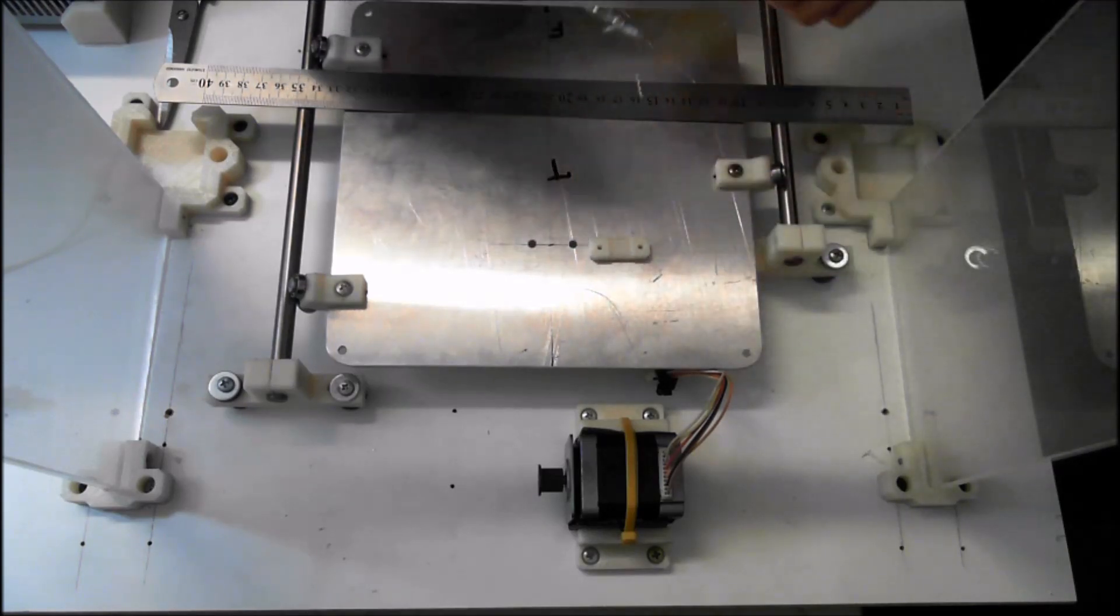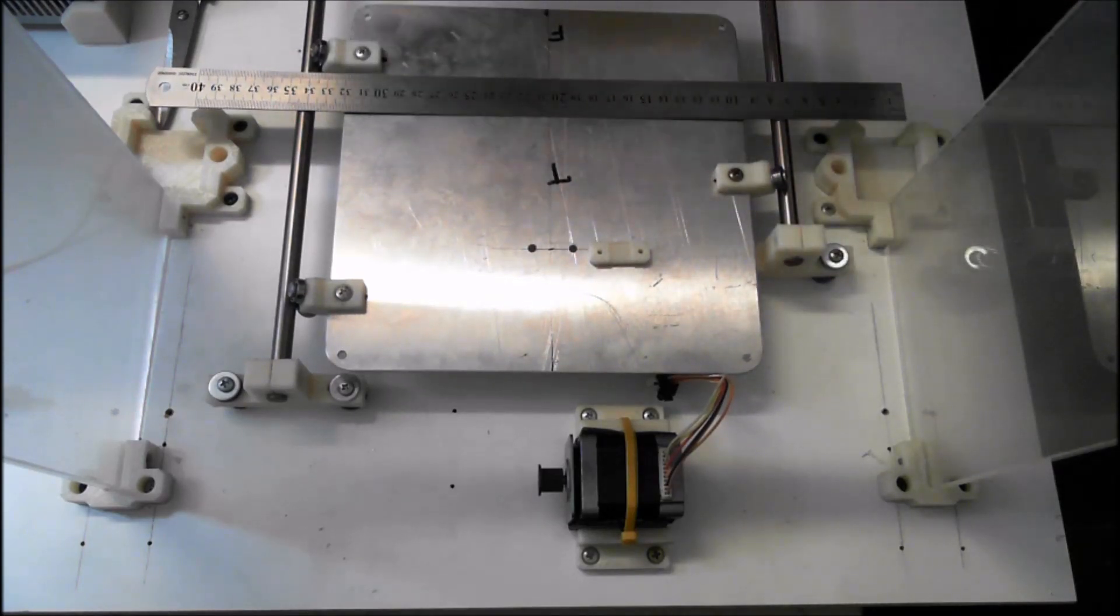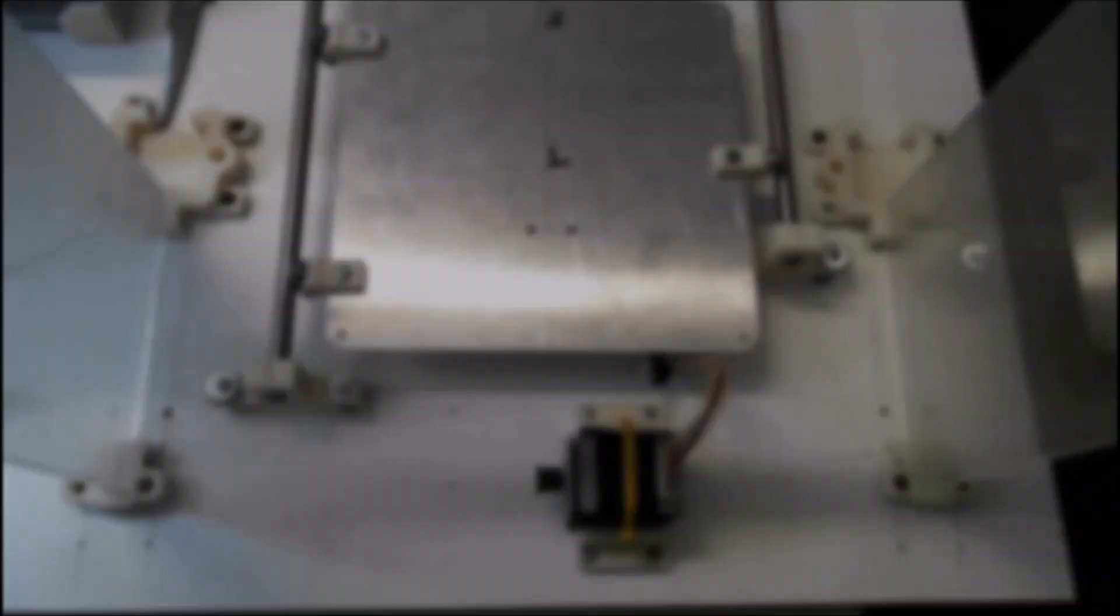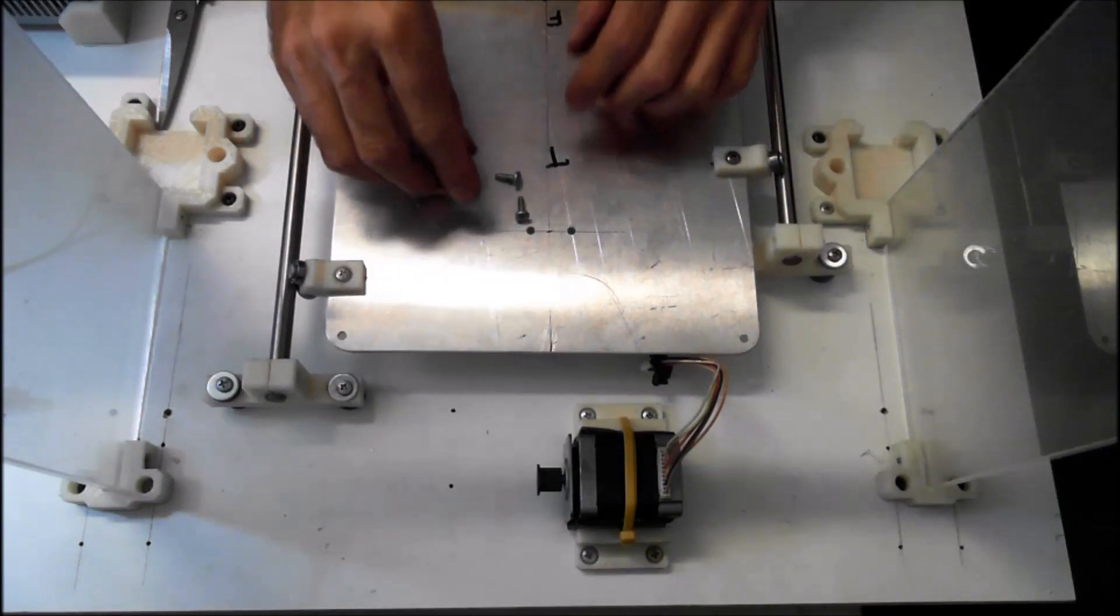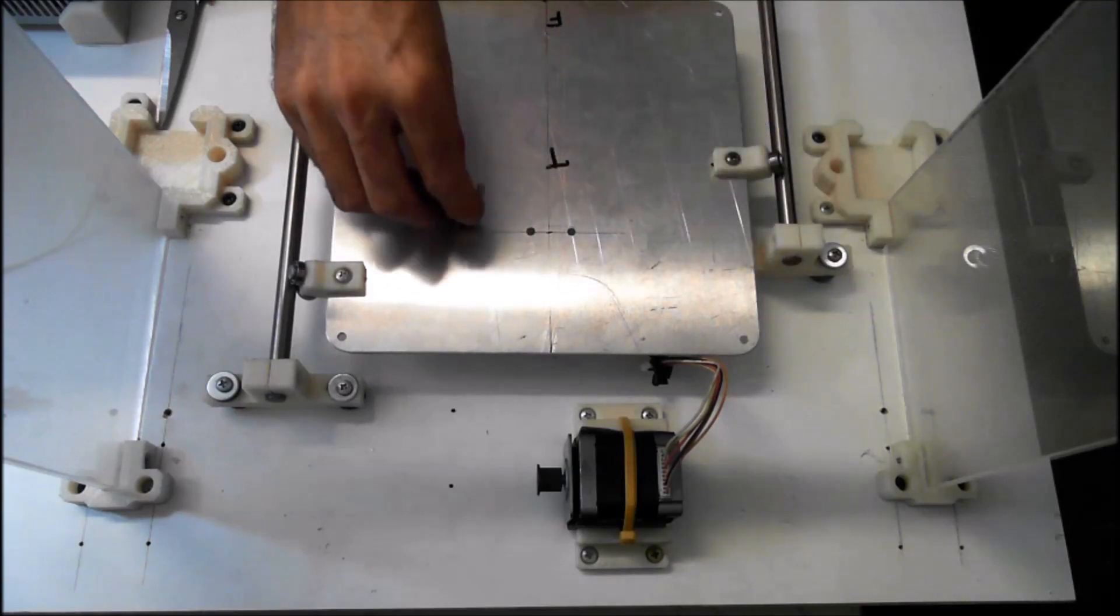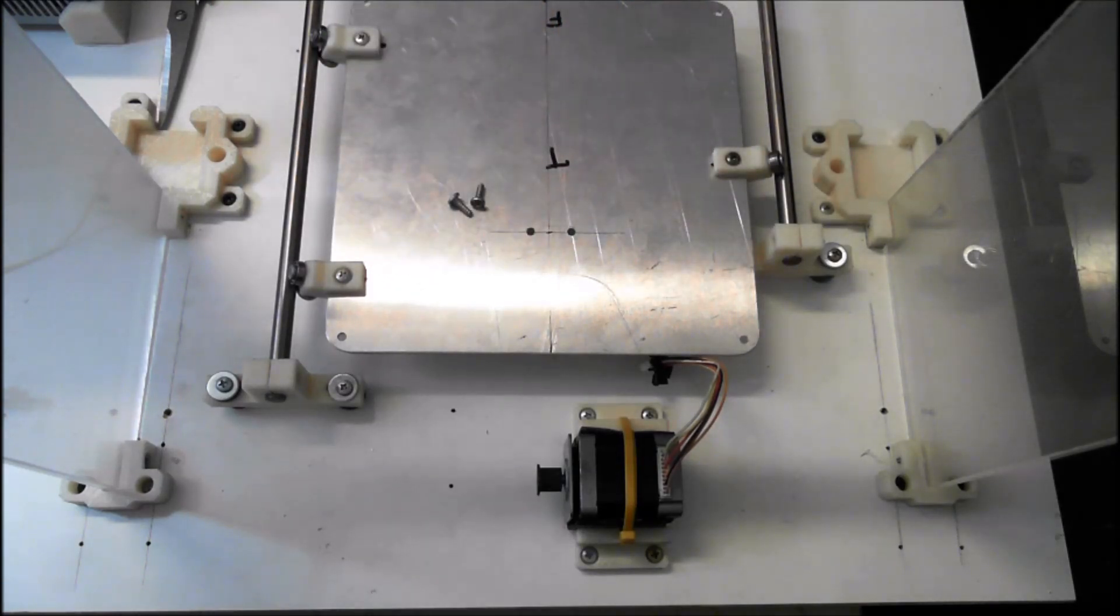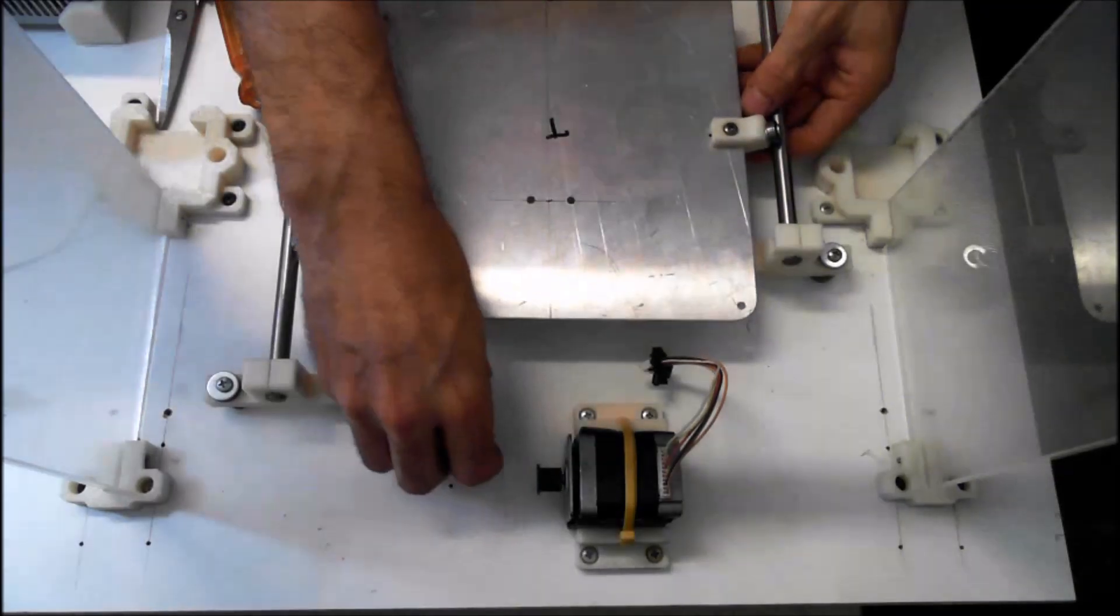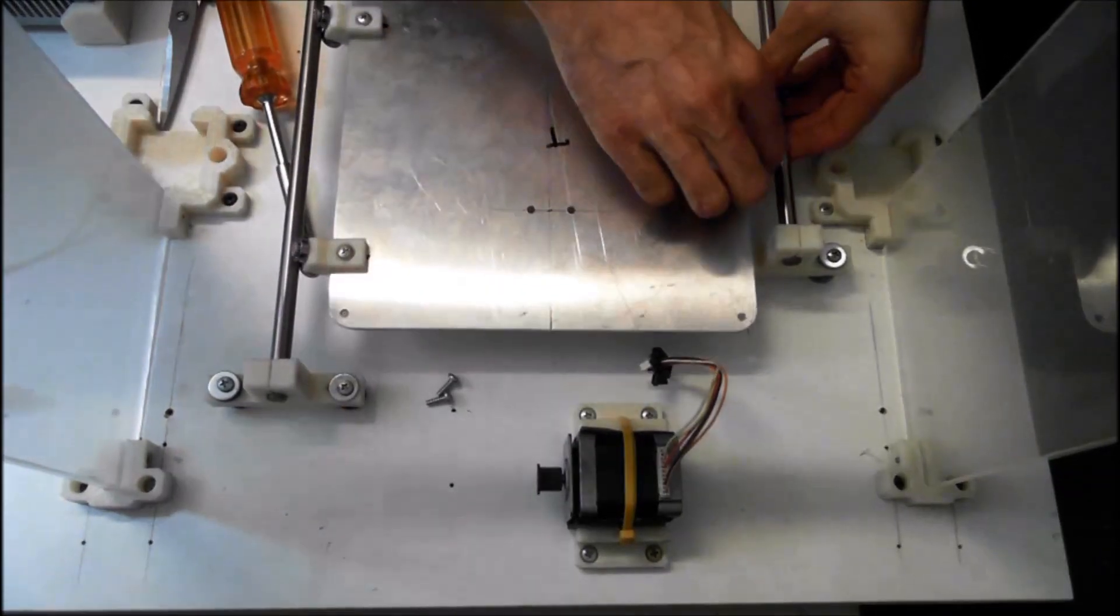You can use M3 but M4 is a bit stronger. Grab yourself some M4 self tappers around 10mm long, doesn't matter if it's a bit longer. We've got our M4 screws about 10mm long, screwdriver, and we're going to install the belt clamp.